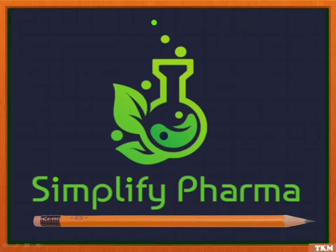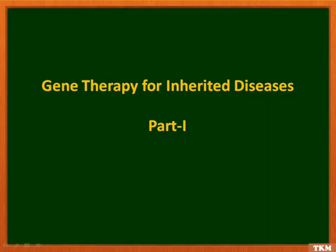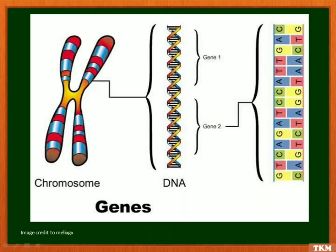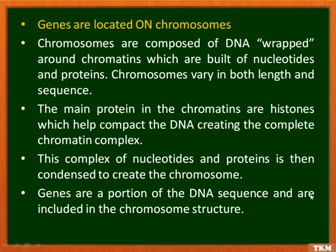Hi students! The very first topic that we are going to cover today is gene therapy for inherited diseases. Most often students are confused whether chromosomes form part of a gene or genes form a part of a chromosome. As we can see in this figure, a chromosome is made up of a highly supercoiled DNA structure and each nucleotide sequence on this DNA structure forms a part of a gene. So basically genes are located on chromosomes.